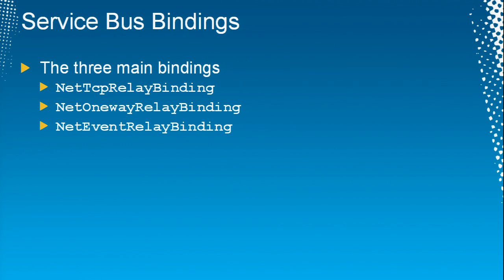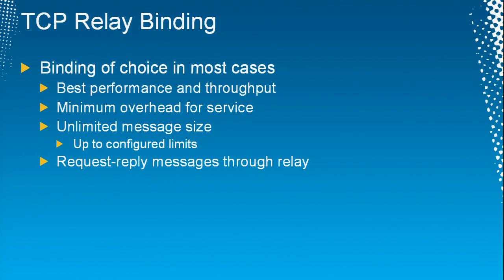When you're programming against a service bus, you use WCF as the predominant programming model. If you know WCF, life is good — you already know how to program against a service bus. There are a bunch of bindings. The three main ones are the TCP relay binding, the one-way relay binding, and the event relay binding. The TCP relay binding is the binding of choice — that's the workhorse you'll use in the vast majority of cases. It gives you the best performance, the best throughput, and minimizes overhead.